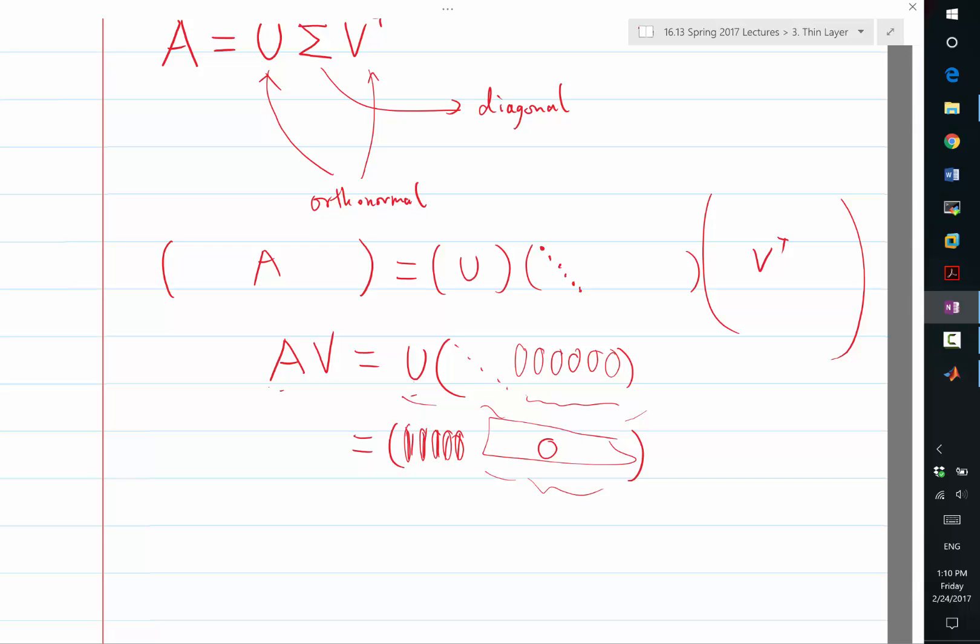Okay, that means I have the null space of A. They are exactly the columns of V corresponding to the excess columns of A, right? So this is why in MATLAB we are trying to use SVD to identify what is the null space of this matrix A.